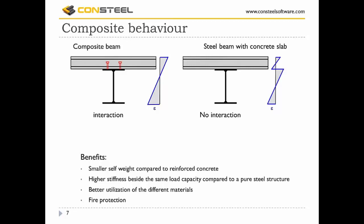Composite behavior is ensured by these headed studs, as shown in the top left picture. There is an interaction between the two materials and they work as one, while the right picture shows when there is no connection between the two materials. This composite behavior provides the benefit of smaller self-weight compared to a reinforced concrete section, higher stiffness beside the same load capacity compared to a pure steel structure, and better material utilization — the steel section carries tension forces and the concrete carries compression forces.